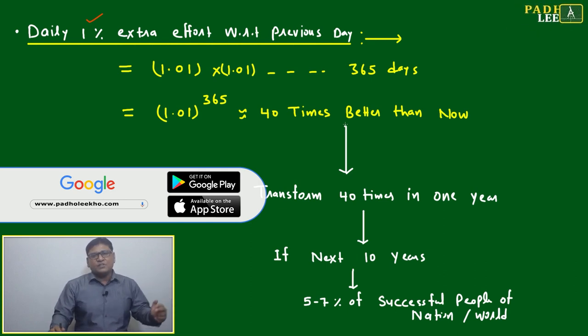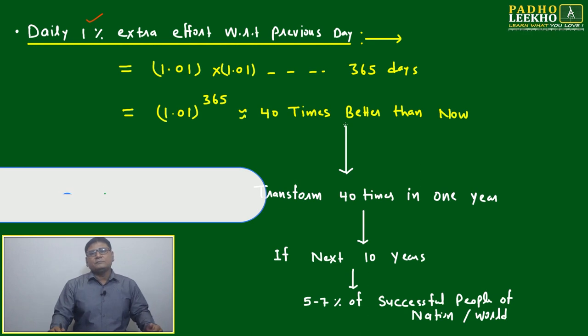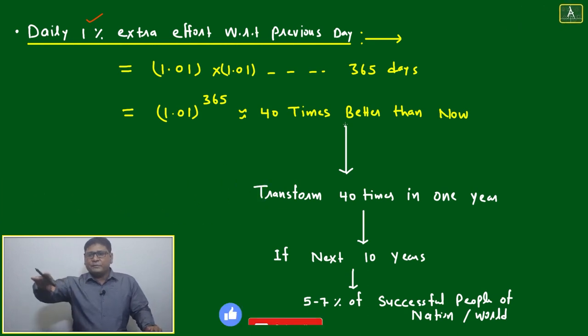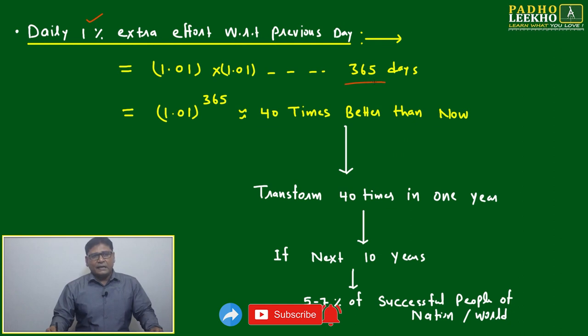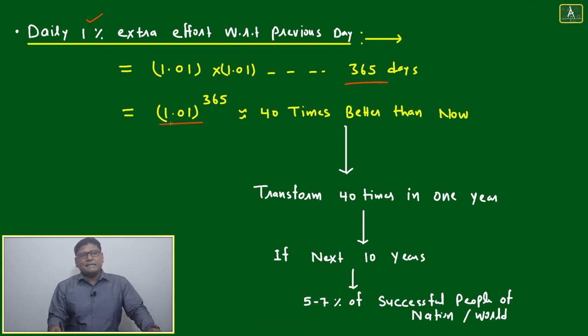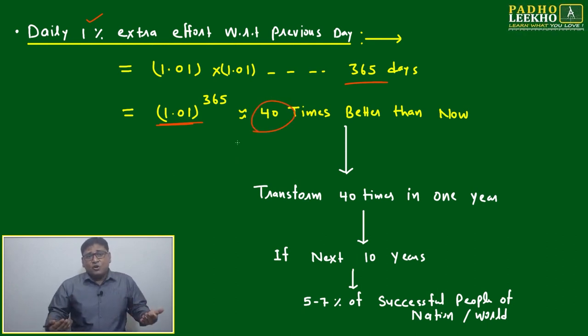Leave that area of improvement, pick another area. Improve one percent, one percent, one percent daily. If you are doing this for 365 days, the simple math: 1.01 to the power 365, you will become 40 times better than now in one year only. It is a transformation—40 times better transformation.